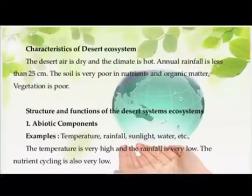The desert is dry and the climate is very hot. The annual rainfall is less than 25 cm. The soil is very poor in nutrients and organic matter, and vegetation is also very poor. The structural components of the desert include abiotic components such as temperature, rainfall, sunlight, and water. The temperature is very high, rainfall is very low, and nutrient cycling is also very low.